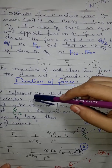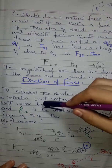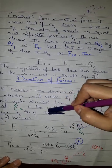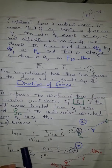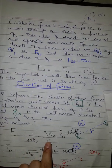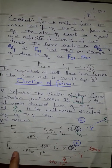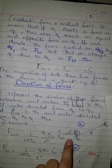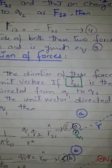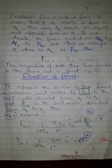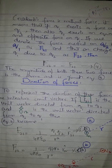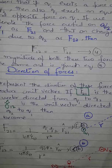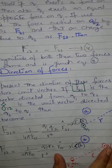Looking at the diagram: if q2 exerts force on q1, the force is in one direction and the position vector is in the direction of q2. If q1 exerts force on q2, the force is denoted F₁₂ and the position vector is in the direction of q1. The magnitudes of both forces are the same and are given in equation number three.